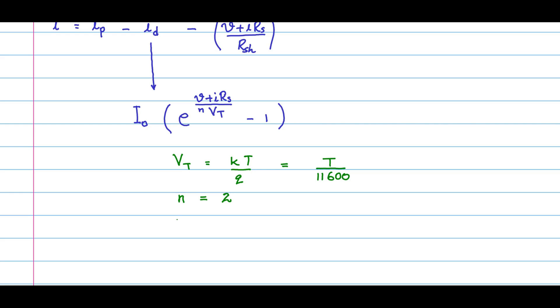Now I_naught itself, called the reverse saturation current, is also dependent on the material and the doping of the p and the n junctions. Not only that, I_naught is dependent on temperature. So this is given by the following relation.